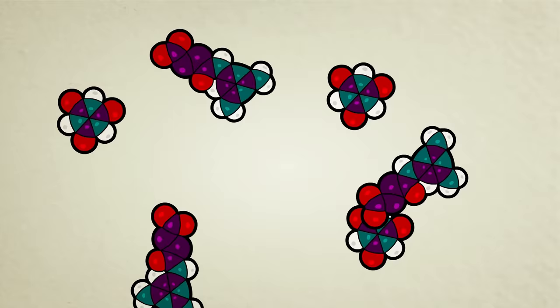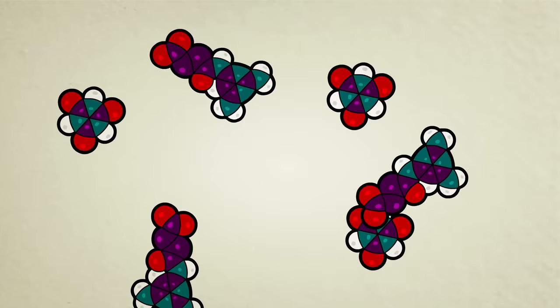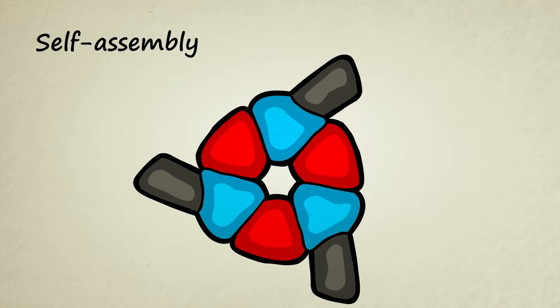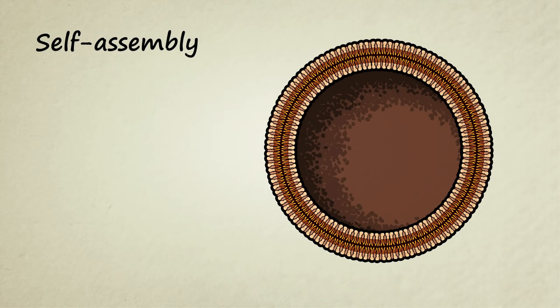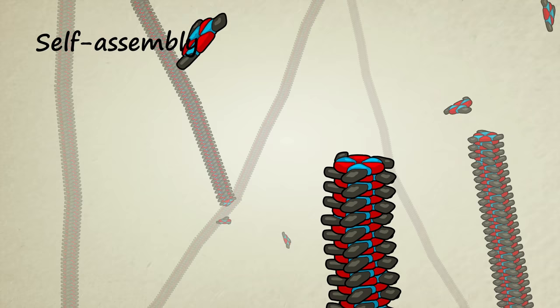Surprisingly, we've also found that certain molecules have the remarkable ability to self-assemble into complex, orderly structures. Some self-assemble into hollow spheres, almost identical to the membranes of modern living cells. Others self-assemble into long columns, remarkably similar to the strands of DNA found in life.